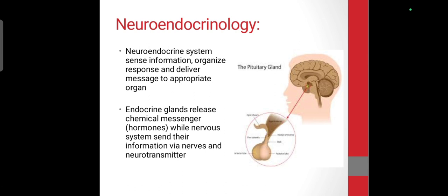The neuroendocrine system basically sends information, organizes the response according to that information, and then delivers the message to the appropriate gland. So whenever hormones are released, it is because of the neuroendocrine system. The nervous system and endocrine system work together — the nervous system sends information through nerves and neurotransmitters, and on that basis the endocrine system releases hormones.